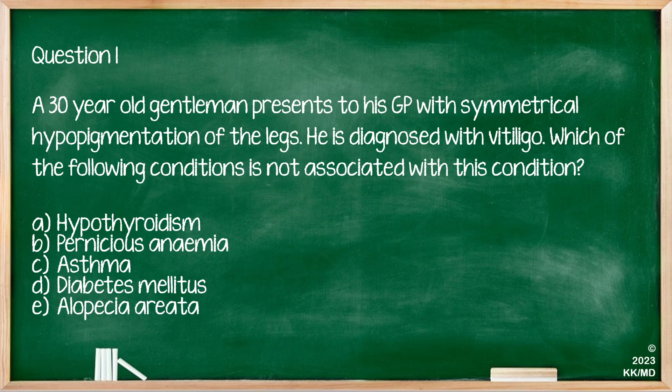If you recall from our session earlier, you would realise that all of these conditions, other than one, are in fact autoimmune conditions, so they could technically be associated with vitiligo, which is also an autoimmune condition. The condition that is not related to vitiligo, and is certainly not an autoimmune condition amongst the list given, is option C — Asthma.